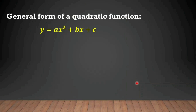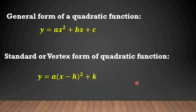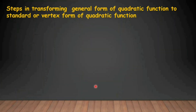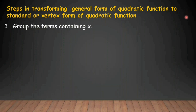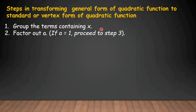This is the general form of quadratic function: y equals ax squared plus bx plus c. Our goal is to transform it into the standard or vertex form of quadratic function. Here are the steps in transforming general form to standard or vertex form. First, group the terms containing x. Number 2, factor out a.